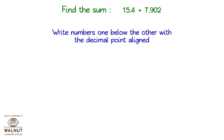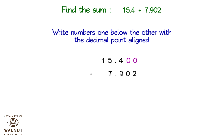Find the sum 15.4 plus 7.902. Write numbers one below the other with the decimal point aligned. 15.4 plus 7.902 — we add 2 zeros after 4, making it 15.400. Our answer is 23.302.